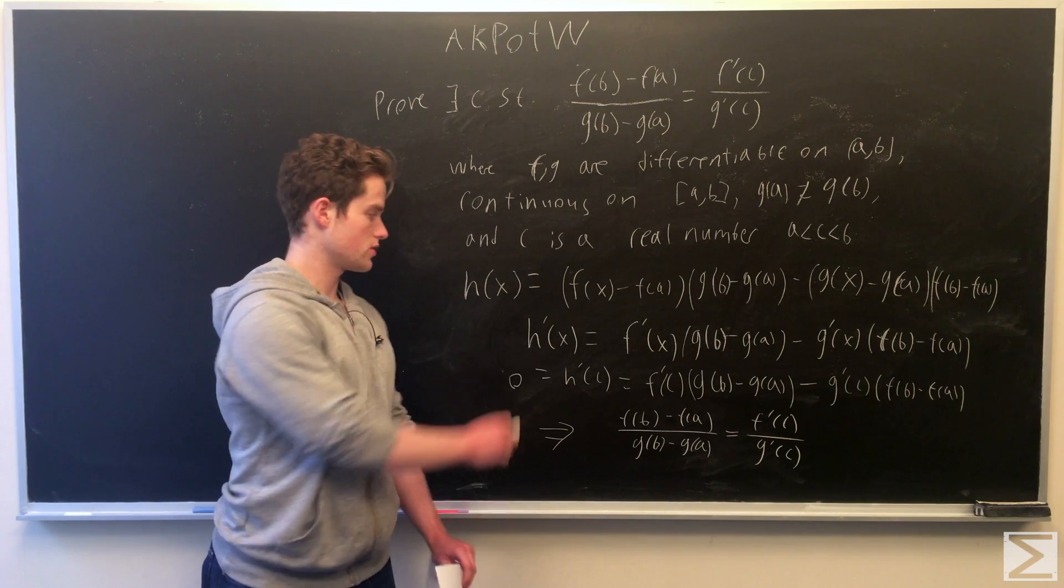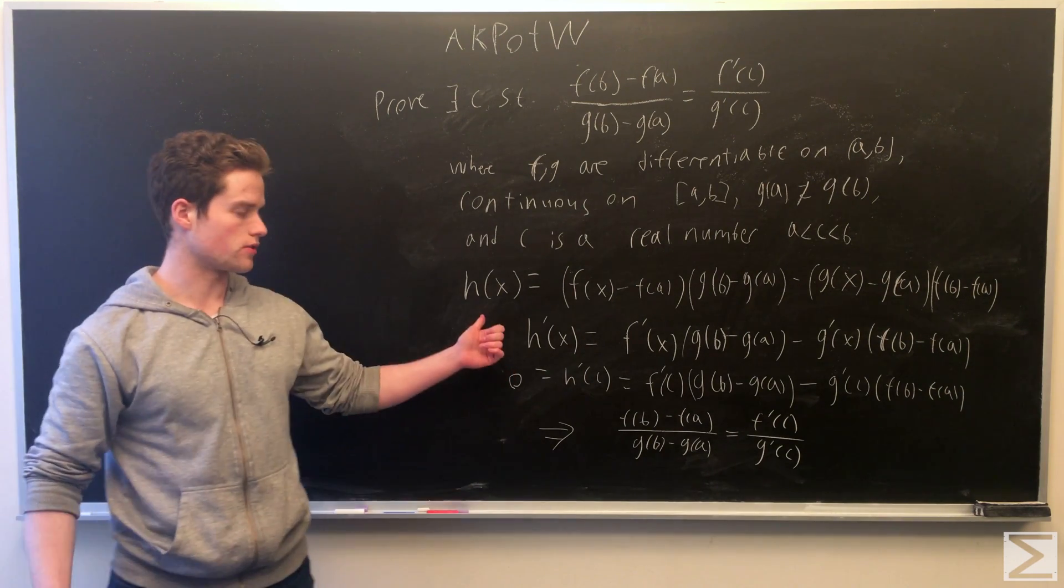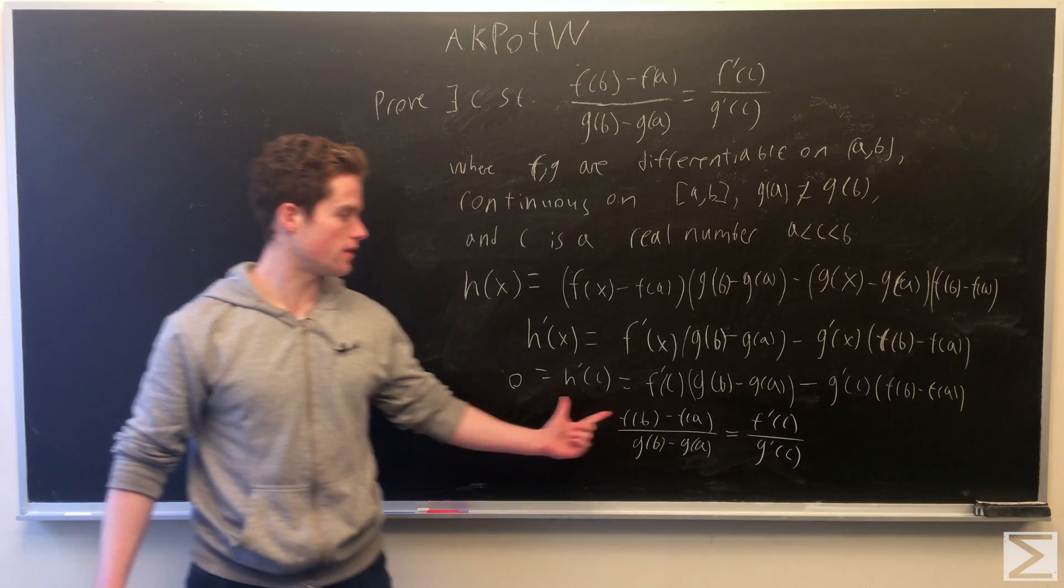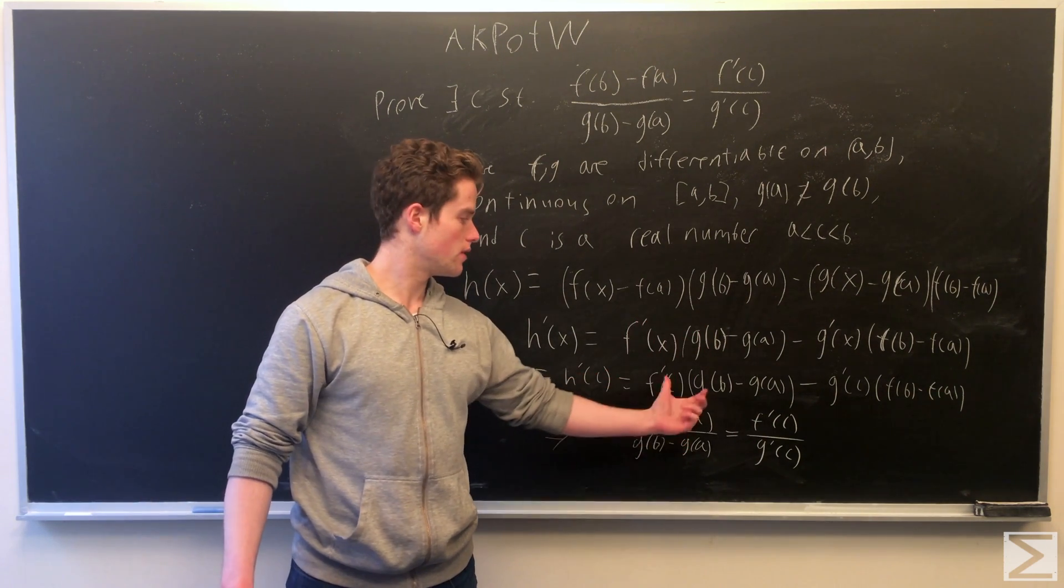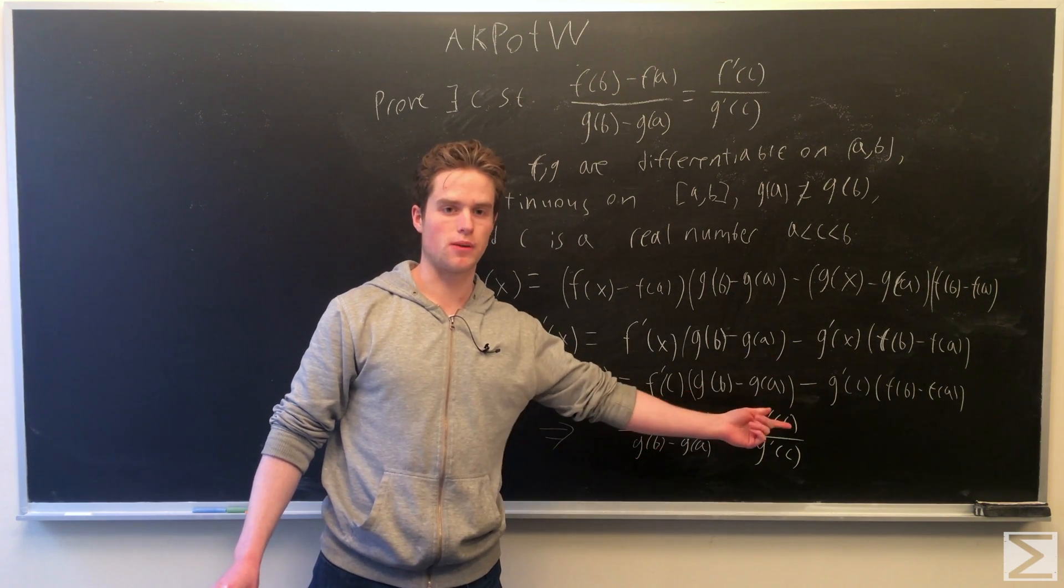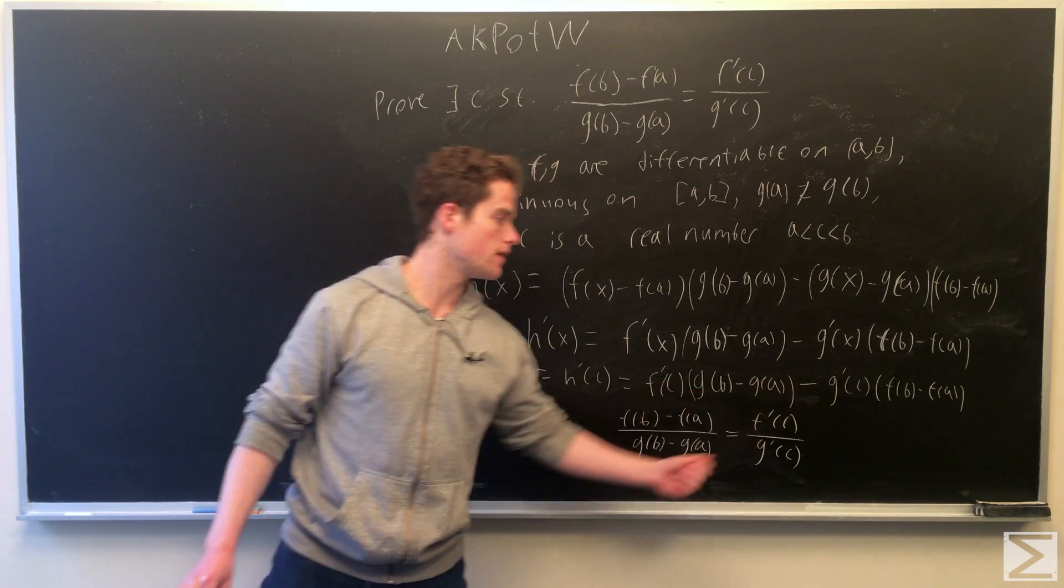So because this function, this new function we considered, has some value c where its derivative is 0, plugging that in to what's equal, we have f prime of c times g of b minus g of a minus g prime of c times f of b minus f of a equals 0.